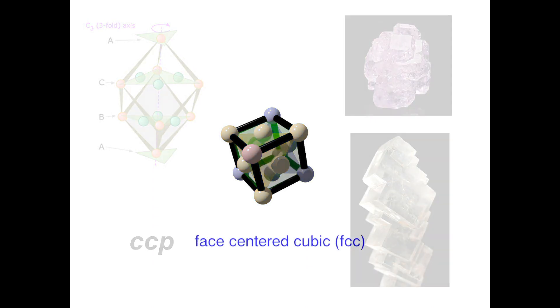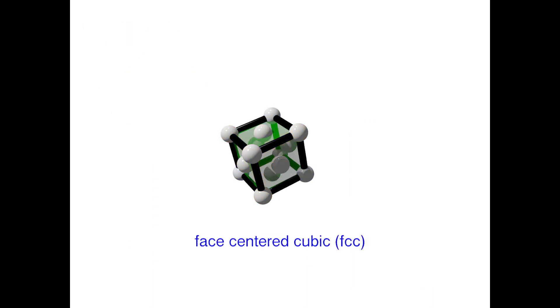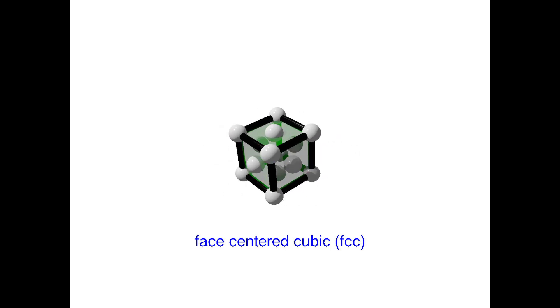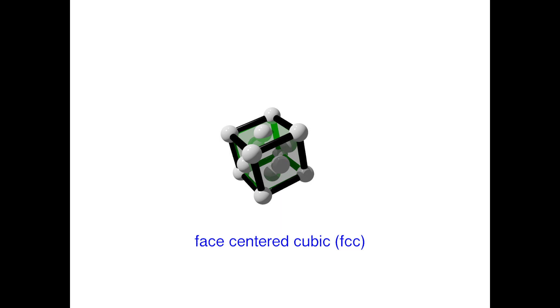Now let's just get rid of the colors for a moment. I'm going to color all the spheres gray and let's have a look again at the structure. There are spheres occupying each corner of the cube and each face center of the cube. For this reason, cubic close packing is synonymous with face-centered cubic, or FCC.